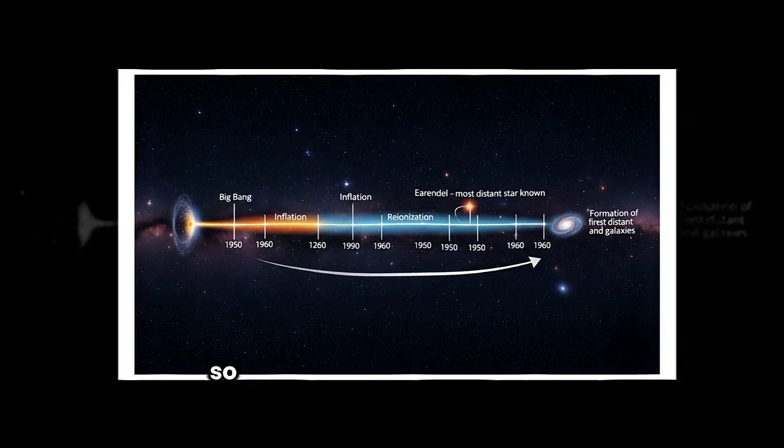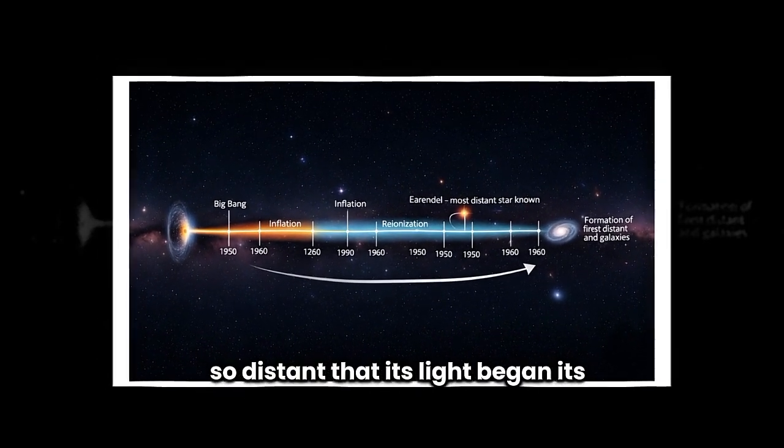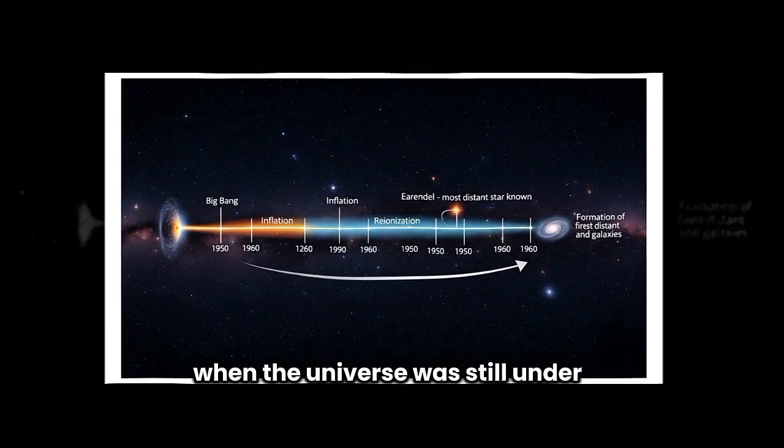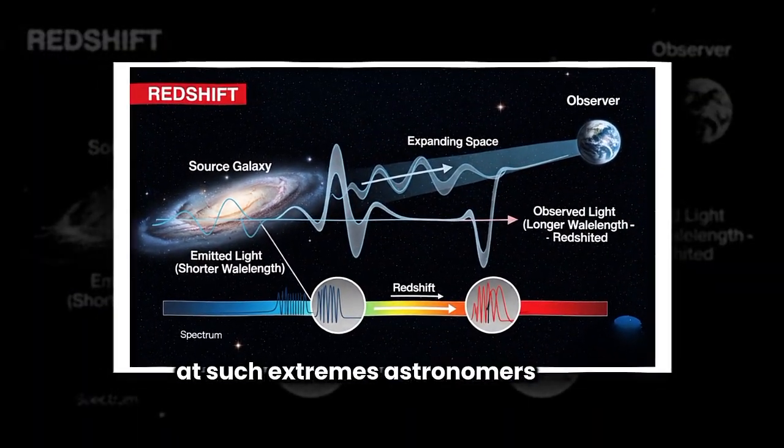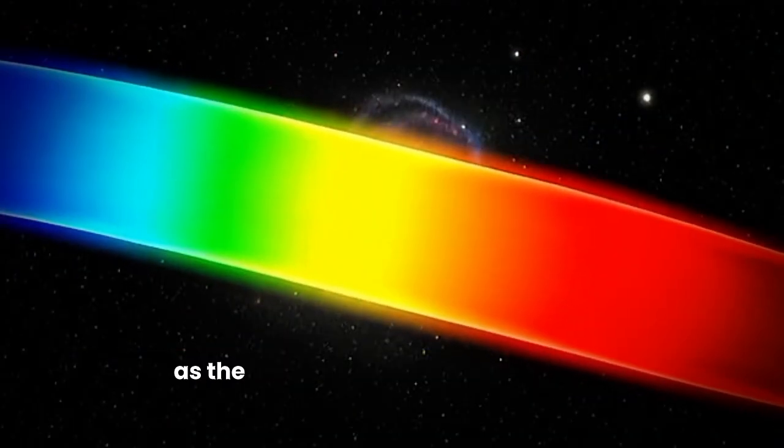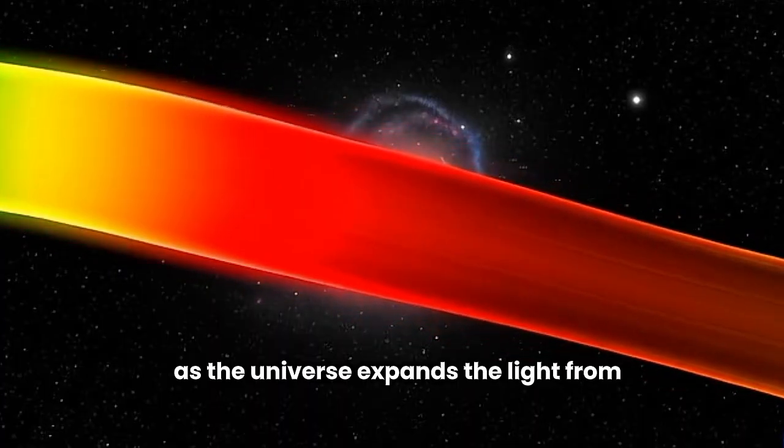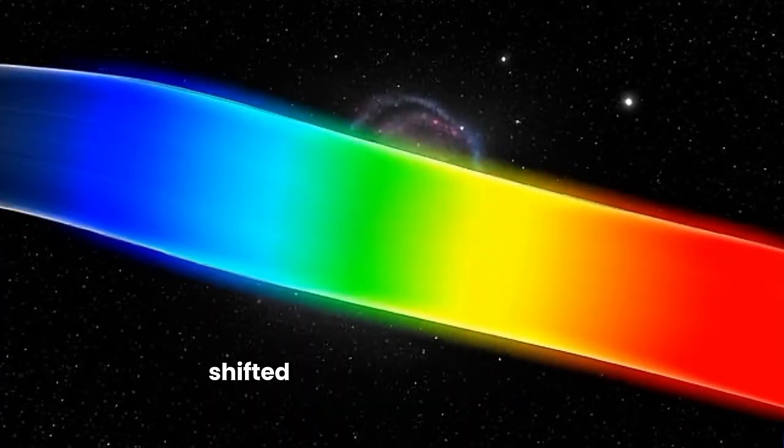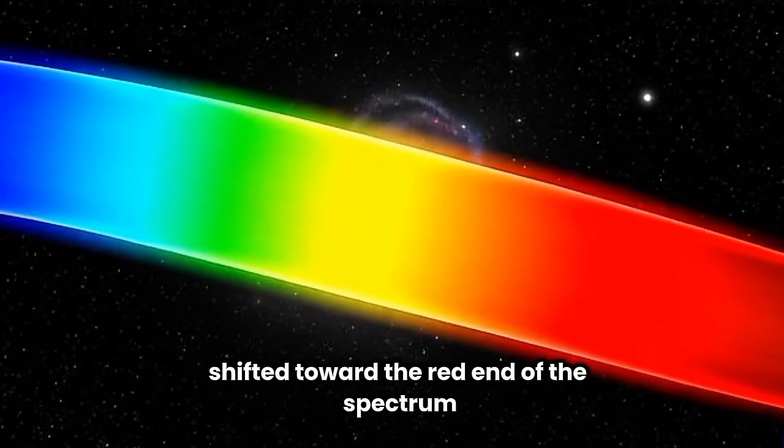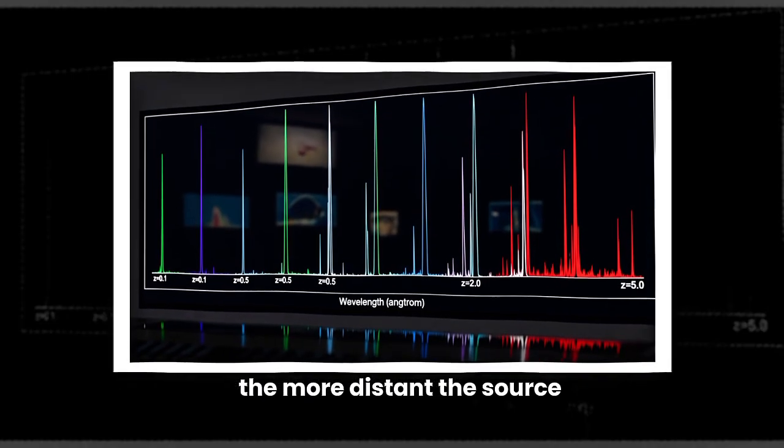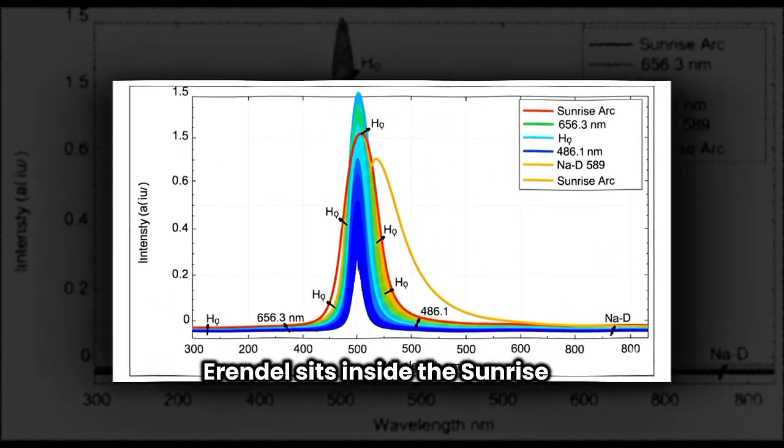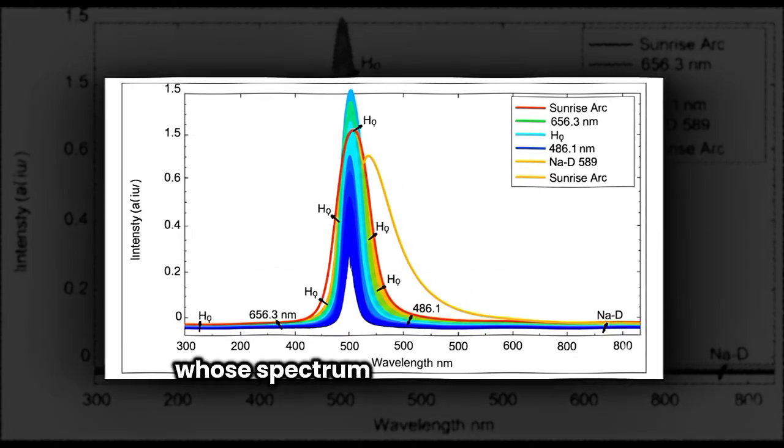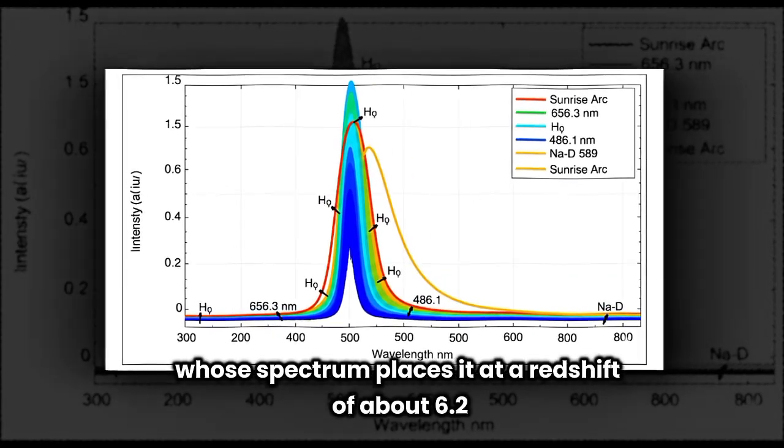Earendel is far beyond that, so distant that its light began its journey when the universe was still under a billion years old. At such extremes, astronomers turn to redshift. As the universe expands, the light from galaxies is stretched, shifted toward the red end of the spectrum. The more distant the source, the greater the stretch. Earendel sits inside the Sunrise Arc galaxy, whose spectrum places it at a redshift of about 6.2.